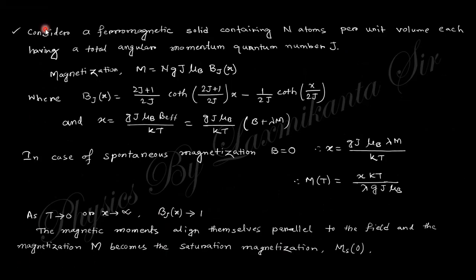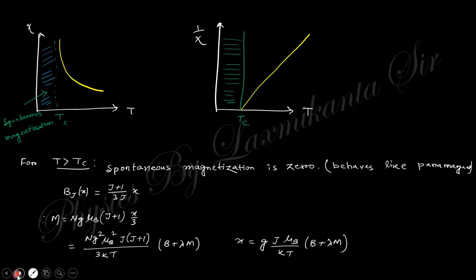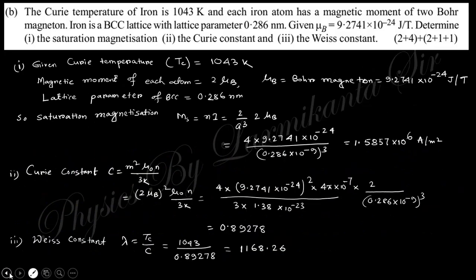The magnetization is given here where P_J is the function. At saturation, B equals to zero gives the saturation magnetization. If you divide these things, you will obtain this expression. For T greater than T_c, spontaneous magnetization is zero, so M is like that, and we obtain the Curie-Weiss law. This derivation was discussed in the theoretical class, available in the playlist in the description box. Finally, we obtain the Curie-Weiss law.